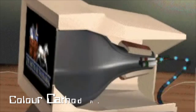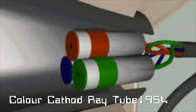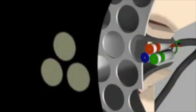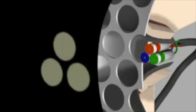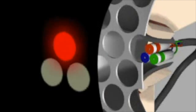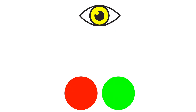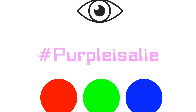A colour CRT adds two more electron guns, and the phosphor coat is now treated with phosphors that will glow either red, green or blue. A mask with tiny holes in it uses the fact that the three guns are coming from slightly different angles to ensure that each electron gun only hits its corresponding colour phosphor. By varying the intensity of these three colours, the screen tricks the eye into thinking it sees all of the other colours.